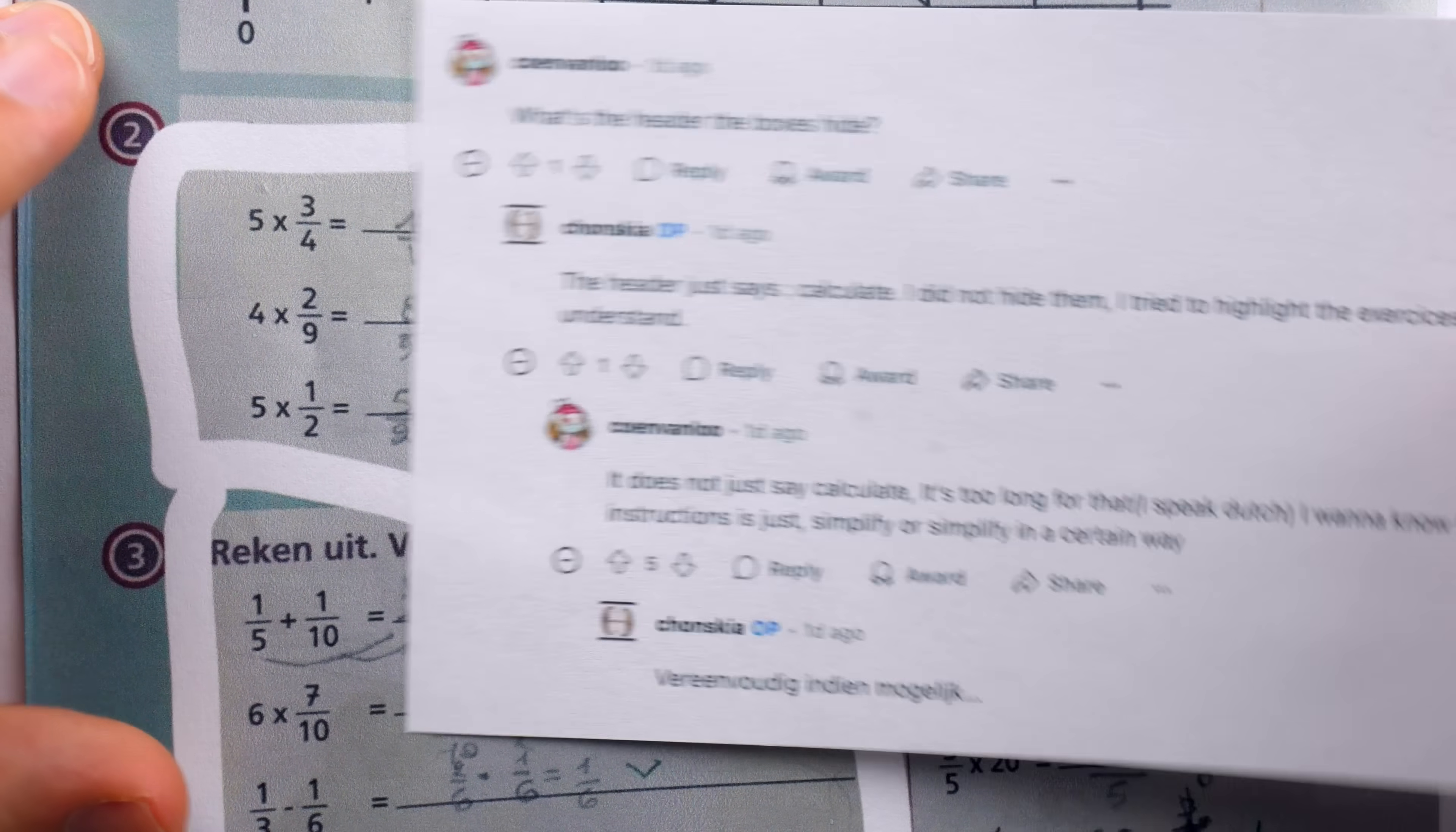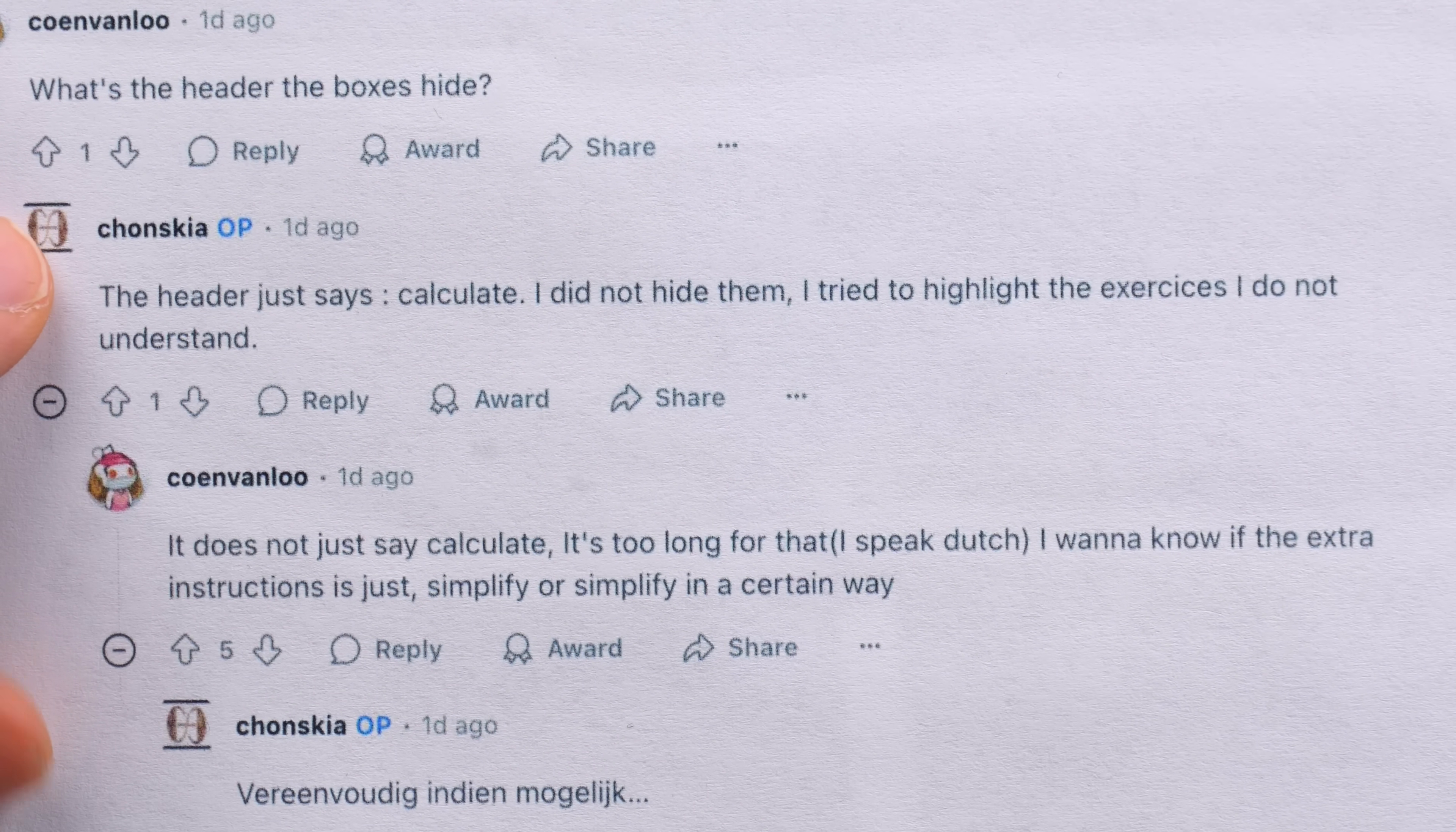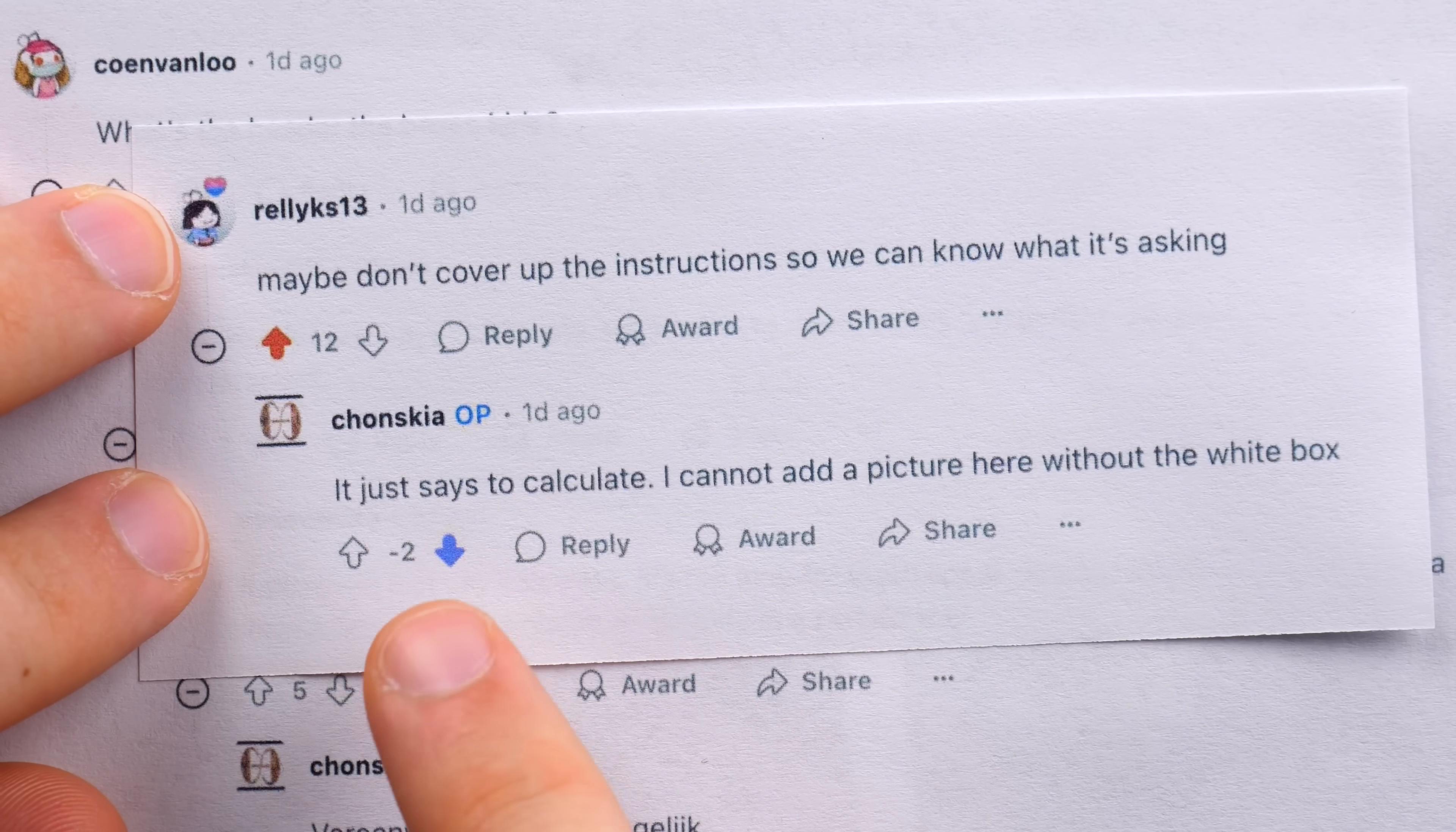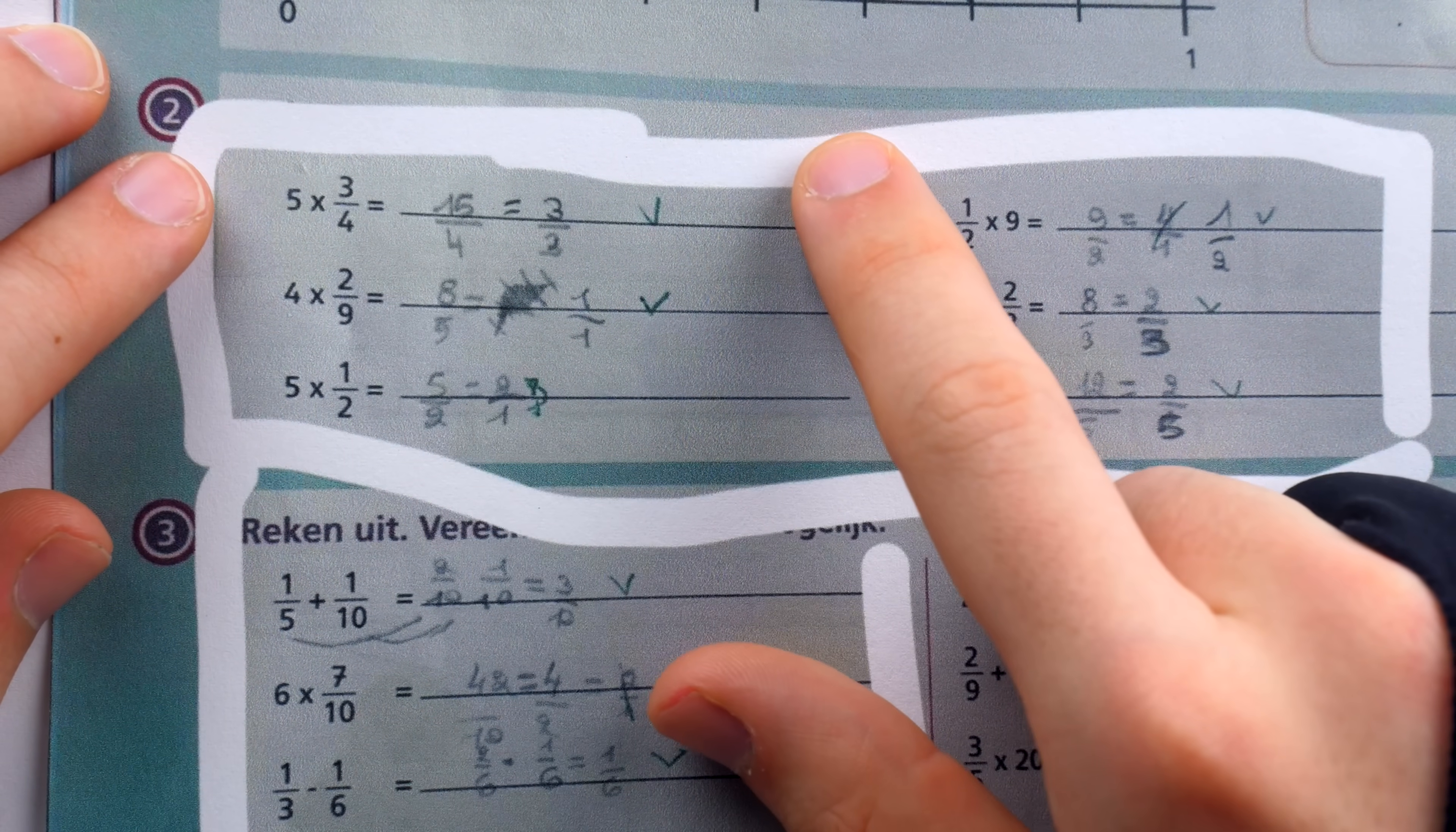So his claim is that it's not possible to upload a photo to Reddit without these white boxes that obscure critical information. Someone else presses him also and asks, what's the header that the boxes hide? The OP says the header just says calculate. I did not hide them. I tried to highlight the exercises I do not understand. Then, it does not just say calculate. It's too long for that. I speak Dutch. I want to know if the extra instruction is just simplify or simplify in a certain way. I must formally rescind my downvote. The OP wanted to put the boxes there just to draw our attention to the part he didn't understand. And he probably didn't think twice about covering up the instructions because they probably didn't say anything significant.